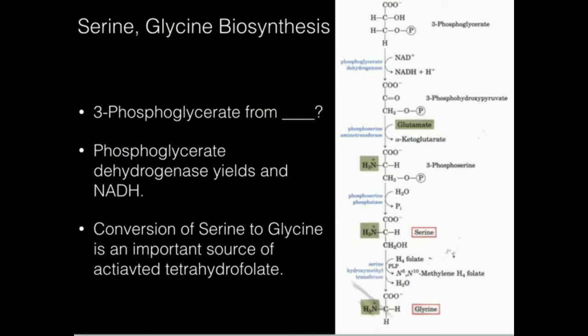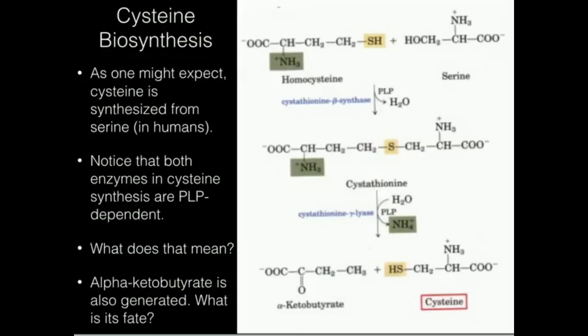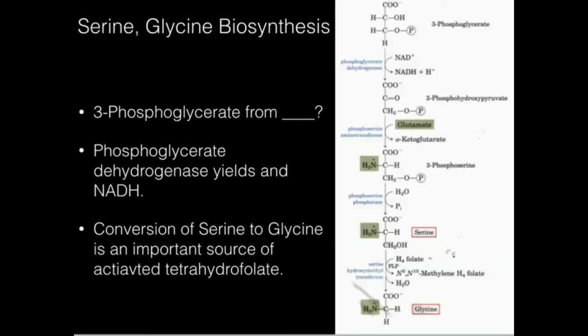But in any case, we get glycine out of that. So this is a pathway that we can do. And that ultimately means that serine, glycine, and then also cysteine, which we're going to see in the next video, those are non-essential amino acids, meaning we can get those through the diet.